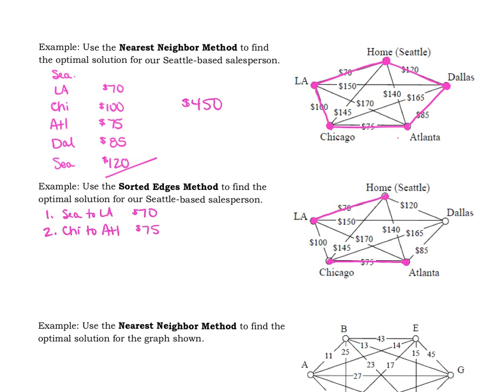And then step three in the algorithm says, repeat until a circuit containing all vertices is formed. So we repeat. So we go back to step number one, find the cheapest edge. So the next cheapest edge is our $85 flight from Atlanta to Dallas. And we have to make sure we follow our rules that we're not creating a circuit. We're not. And that we're not creating a vertex with degree three. So like when we draw this in, we don't have degree three and we will not have that. So we can have Atlanta to Dallas at a cost of $85.